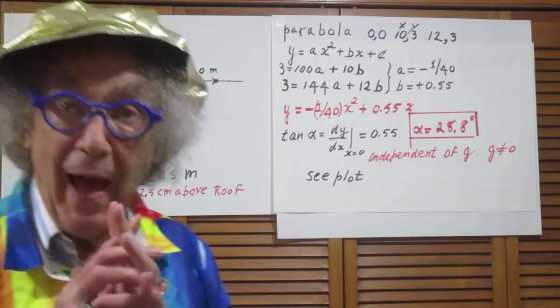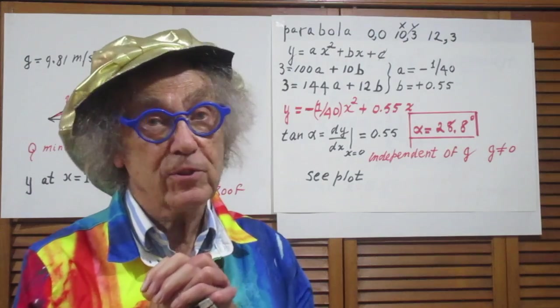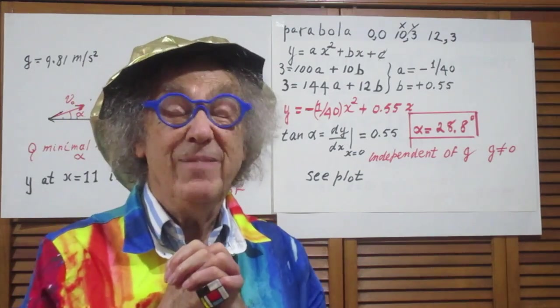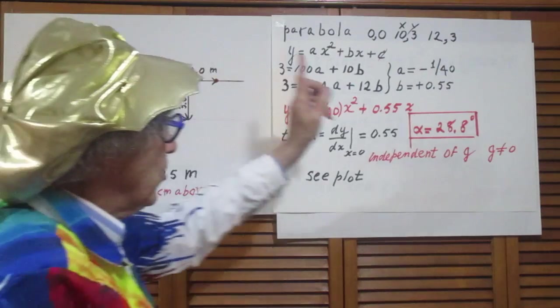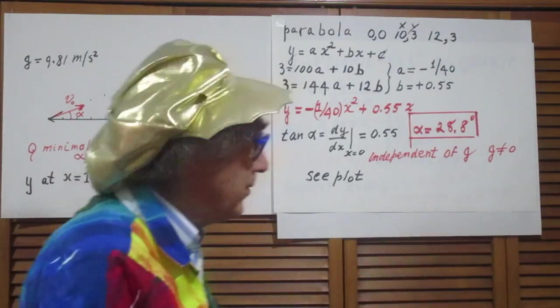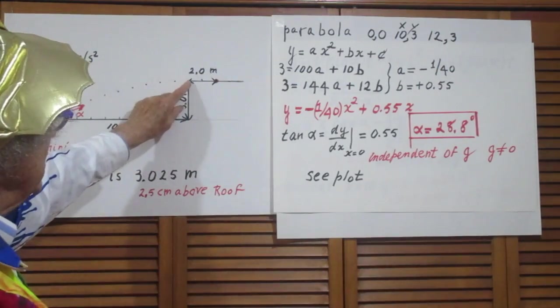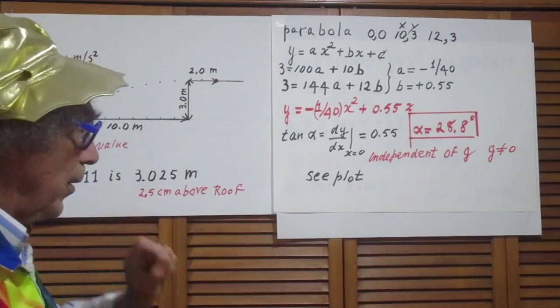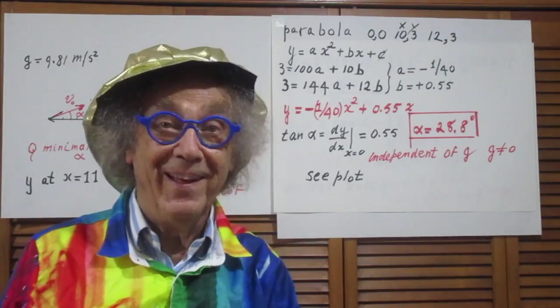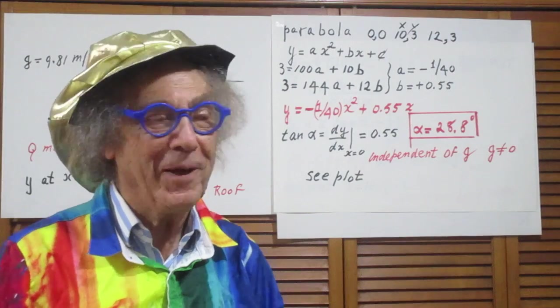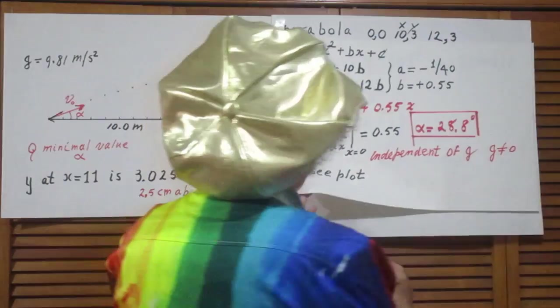What I didn't ask you, but what I could have asked you: what is the velocity v0 at that angle, 28.8 degrees, that just clears this point and hits the target? For that, that is dependent on g, by the way. So let's take a look at that.